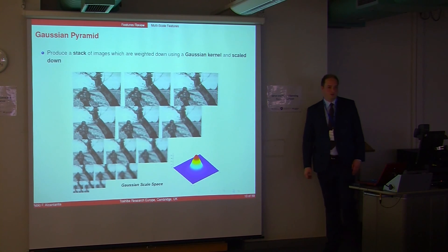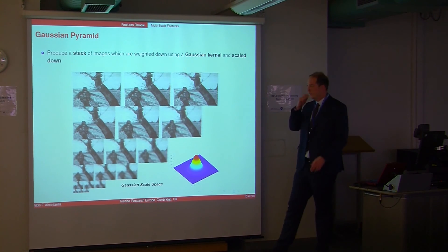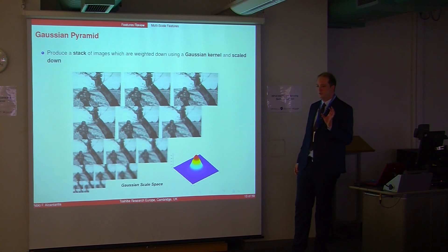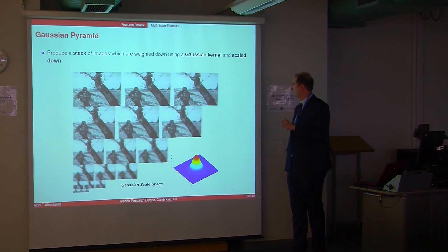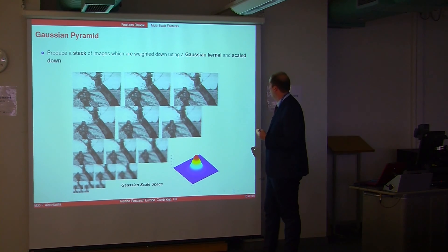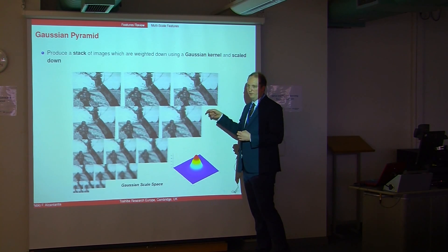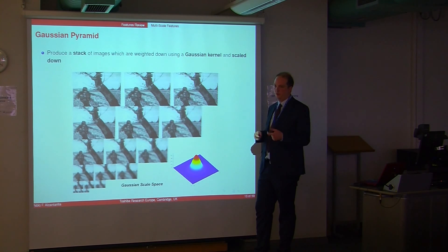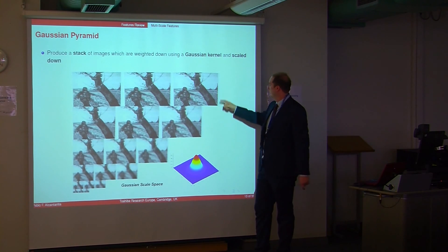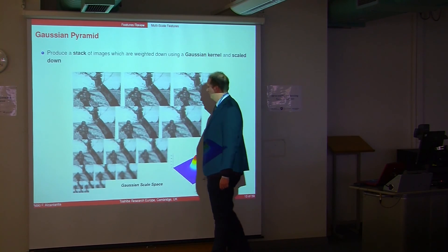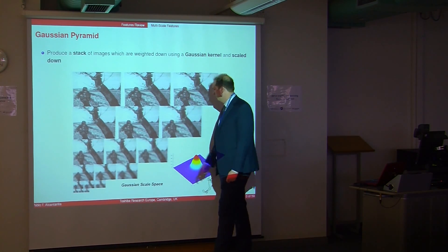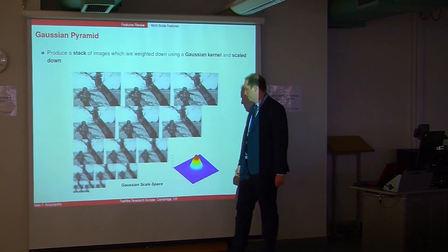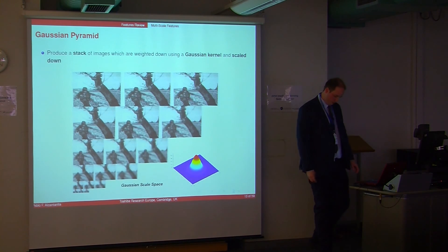One way to compute multi-scale features is using the Gaussian kernel, which is the simplest option for scale space analysis. To build a Gaussian scale space, we convolve the input image L with Gaussian kernels of increasing standard deviation to obtain smooth images. The Gaussian kernel has standard deviation sigma as its width parameter. A classical approach is the Gaussian pyramid, producing a stack of images smoothed and scaled down, where each row represents an octave.